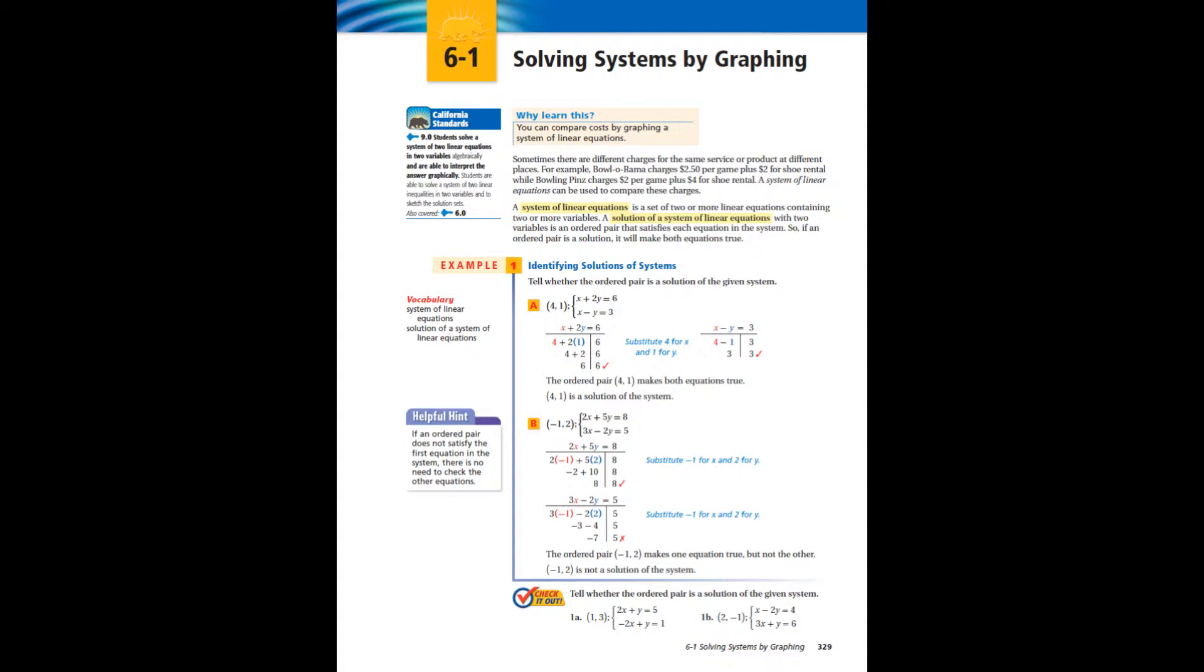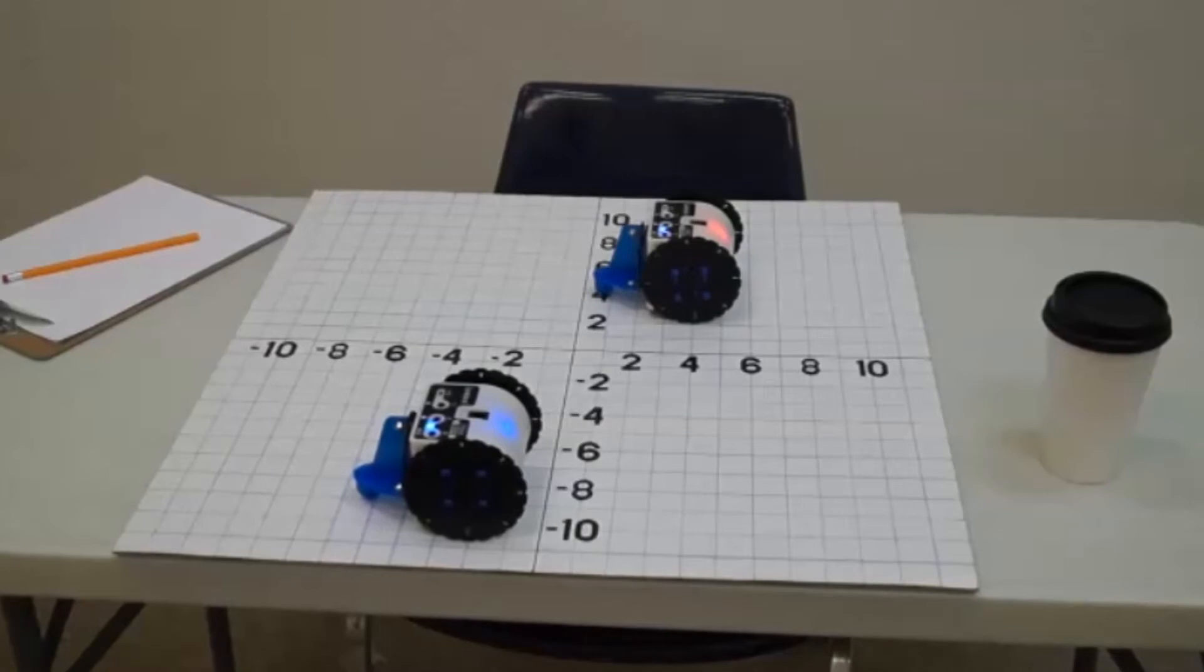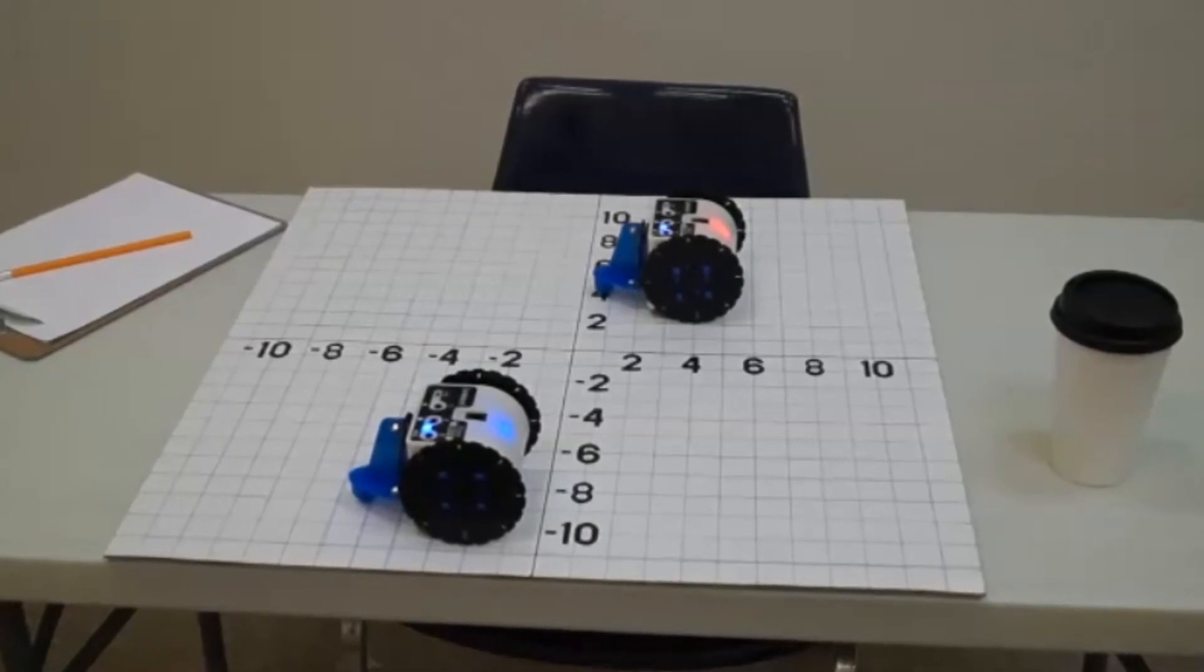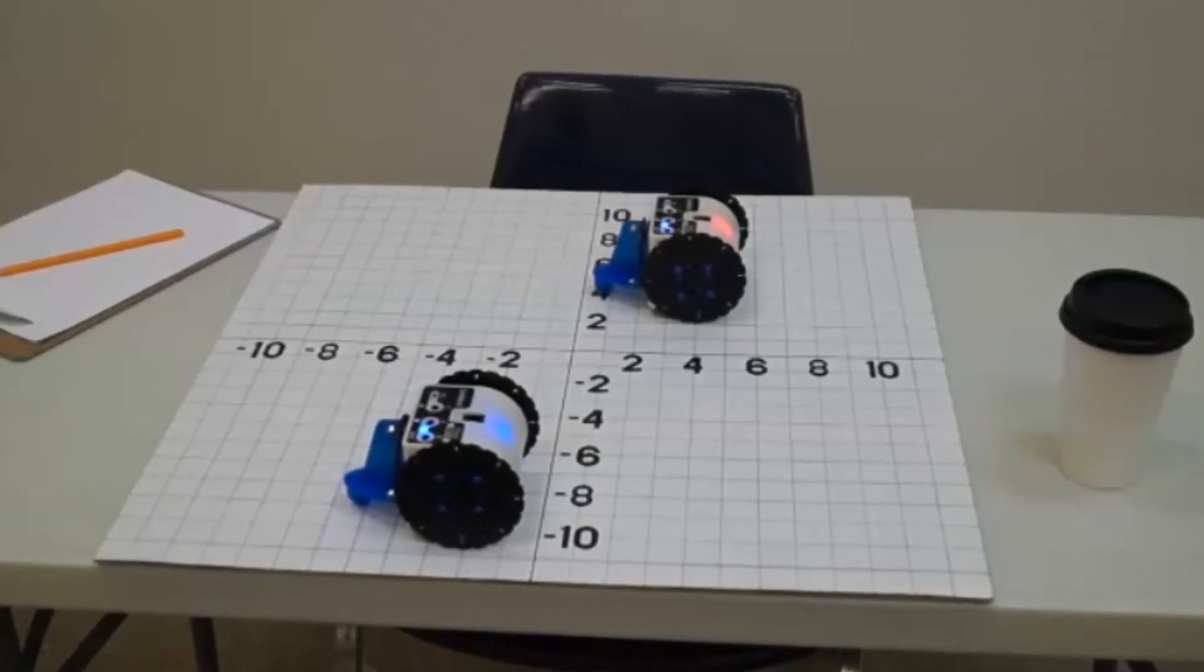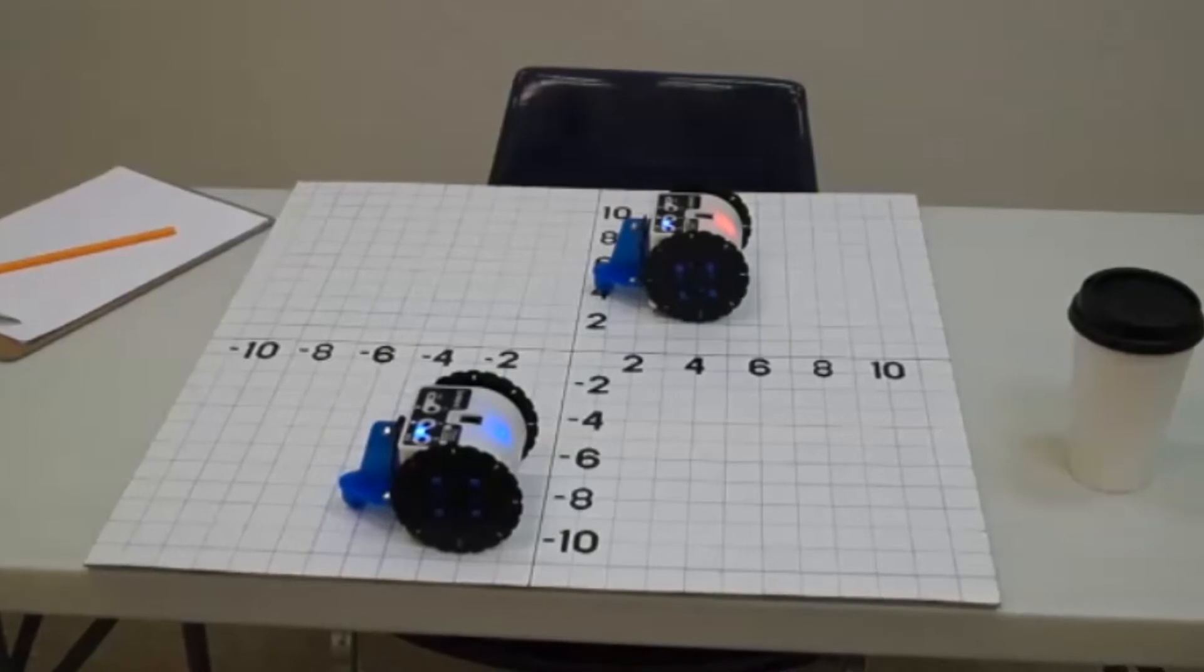We use a situation of a cop chasing a robber. This activity shows how the robots move and are simultaneously shown on the graph. You can see our robots on an activity mat. The LinkBot can change color and in this case the robber robot is red and the cop robot is blue.